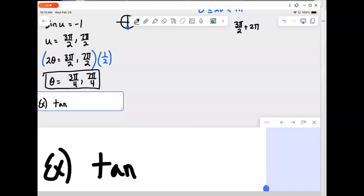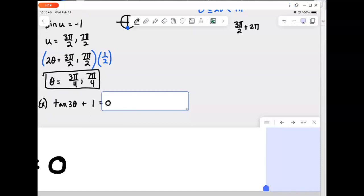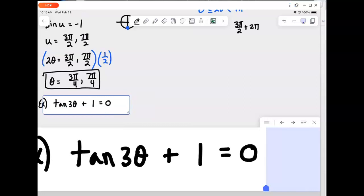And so what we've now transitioned to are trig equations where the angle is not just x or theta or just a single variable. There's something more to it. So in this next example here, we're dealing with tangent 3 theta plus 1 equals 0.